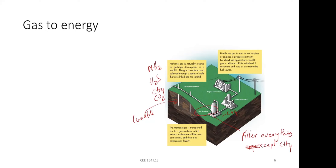Methane gas systems are very effective — like a battery. Unlike a coal thermal power plant, which requires continuous burning and a lot of startup energy, methane gas ignites instantly. Think of charcoal barbecue versus a gas grill: the gas grill is instant, no warmup required. Methane stores energy in gaseous form very efficiently, which makes this a very attractive technology for converting waste into usable energy.